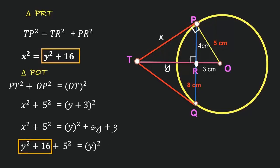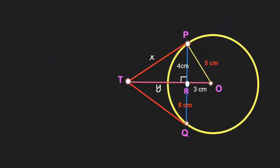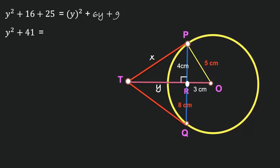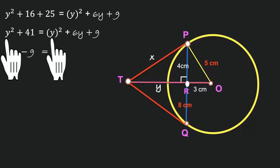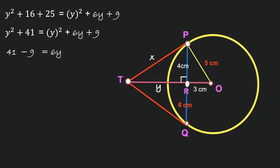Now substitute the value of x²: y² + 16 + 25 = y² + 6y + 9. This simplifies to y² + 41 = y² + 6y + 9. The y² terms cancel, leaving 41 - 9 = 6y, so 6y = 32, therefore y = 32/6 = 16/3.